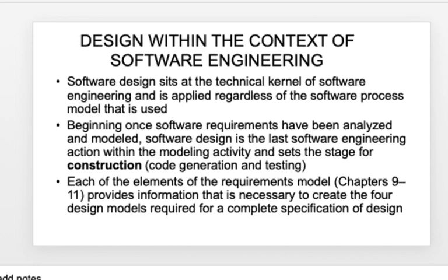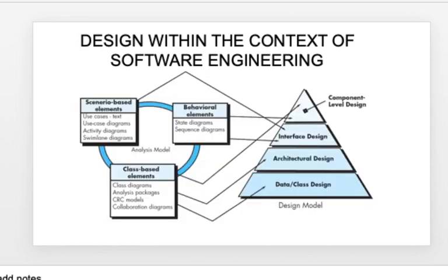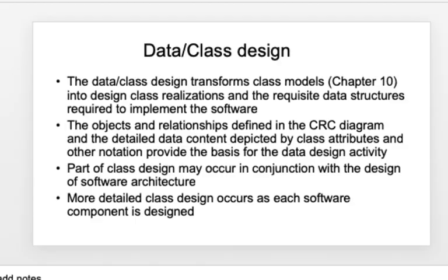Construction basically combines writing code and testing. When you look at each element of the requirements model — you can refer to Roger Pressman's textbook chapters 9 through 11 — this will give you information necessary to create the four design models for a complete specification of design. In the design pyramid, we have scenario-based elements, behavioral elements, and class-based elements: data or class design, architectural design, interface design, and at the top, component-level design.